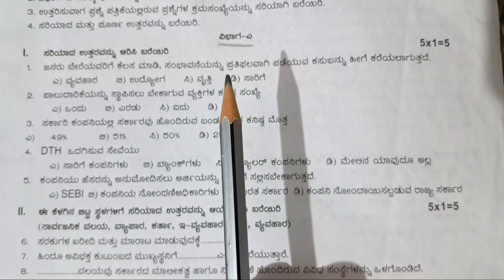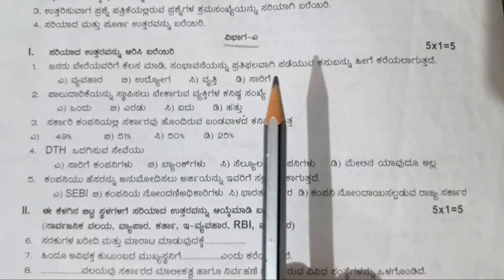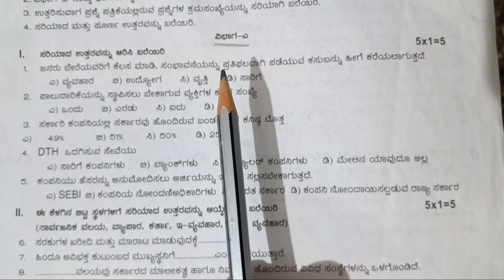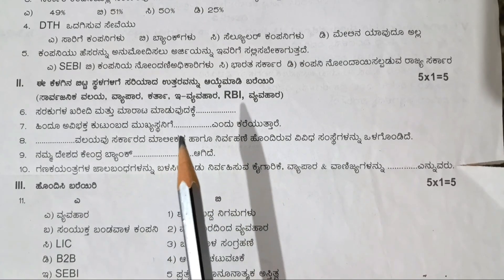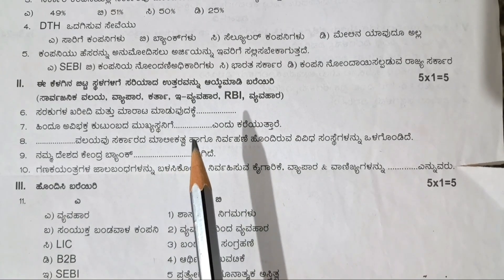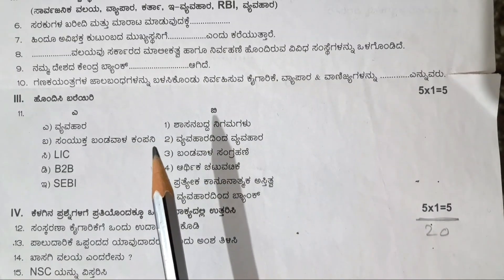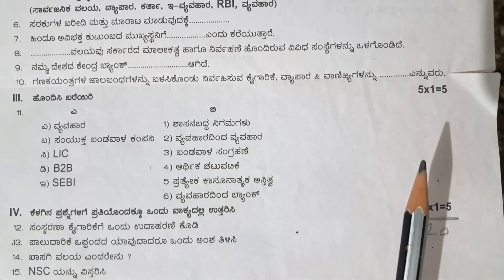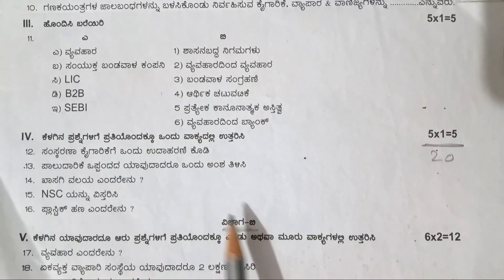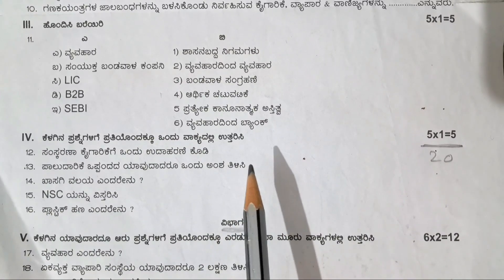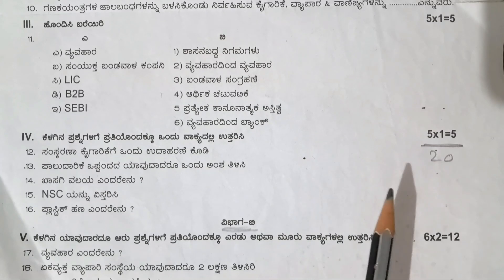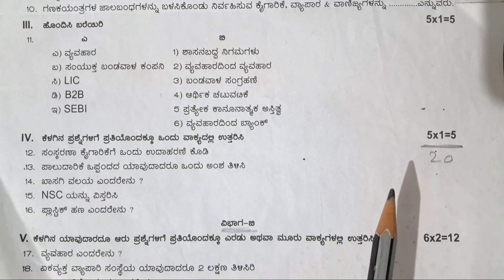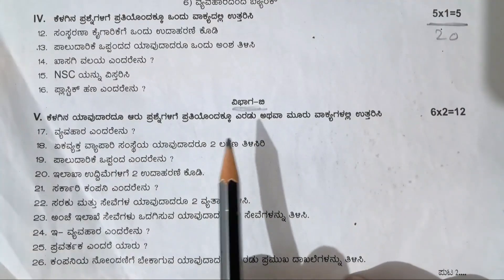Question A has four parts. Part one: five multiple choice questions, one mark each, total five marks. Part two: five fill in the blanks, one mark each, five marks. Part three: five match the following, one mark each, five marks. Part four: five one-line questions, one mark each, five marks. The total marks of section A is 20 marks.